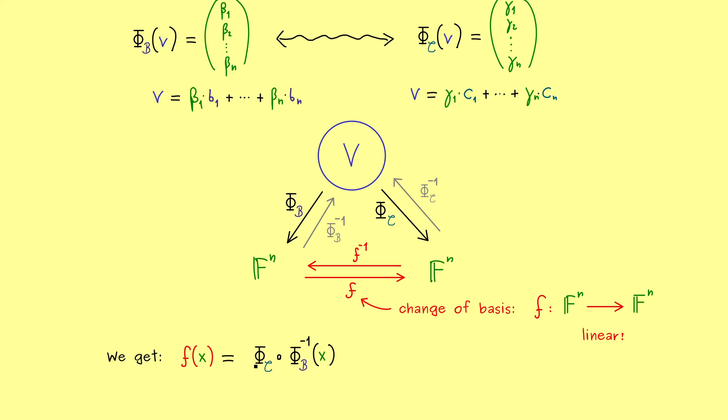So this should not be so complicated as it looks because we already know from linear algebra that each linear map between R^n and R^n is given by a matrix. And of course the same also holds for a linear map between C^n and C^n. In other words we could write down this change of basis as a matrix.